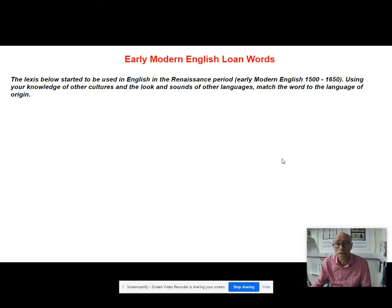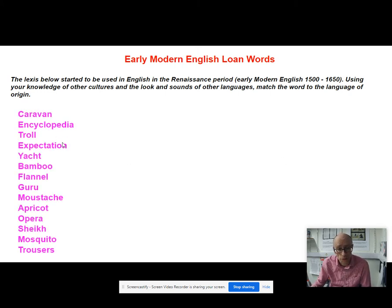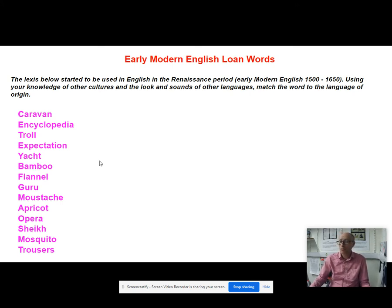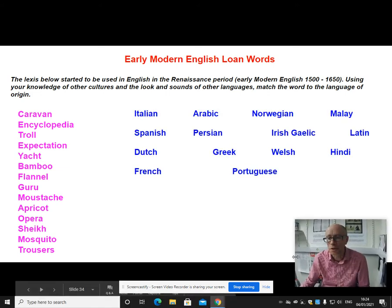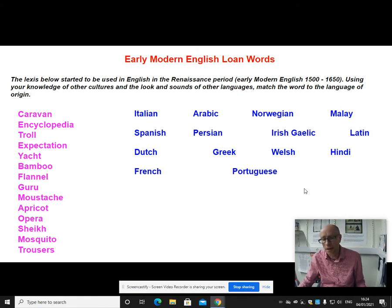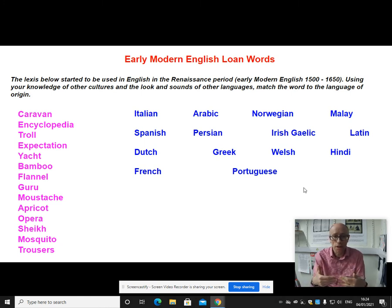I'm going to give you a whole load of words that came into English in this Renaissance period between 1500 and 1650, and what you need to do is match the word on the left with the language on the right. Pause the video there and have a go at doing this matching exercise.